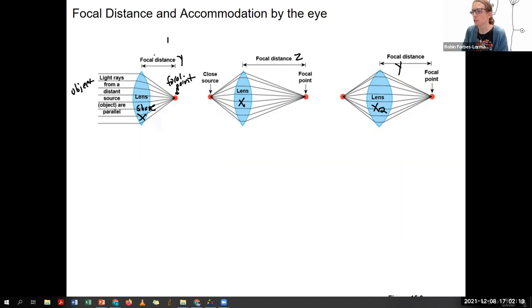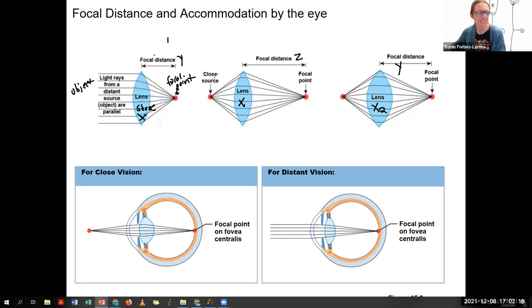For close vision, we've got our lens is rounded when the thing is close. And this is because the ciliary muscles are contracted. And this is the right setup to focus on the fovea.